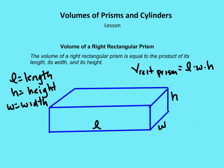The first volume we'll talk about is the volume of a right rectangular prism. The volume of a right rectangular prism is equal to the product of its length, its width, and its height. So we identify the length as L, the width as W, and the height as H. So the equation is volume of a rectangular prism equals length times width times height.